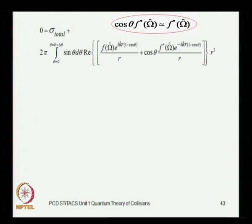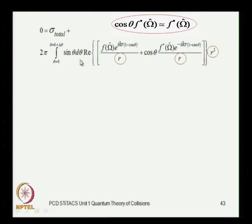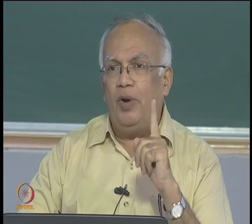Writing this without a: you have 0 = total cross section plus the second term from the interference term, which is 2π times the integration over θ. In this expression there is 1/r in the two terms and r² outside, so you can factor out one power of r. All r-dependent terms come outside the integral: just r to the power 1 from r²/r. Also, e^{ikr} from the first term and e^{-ikr} from the second term come out, while e^{±ikr cosθ} remains in the integral due to θ dependence.